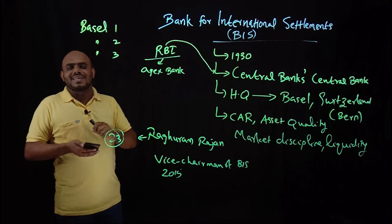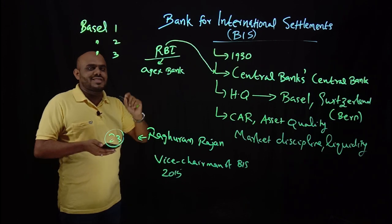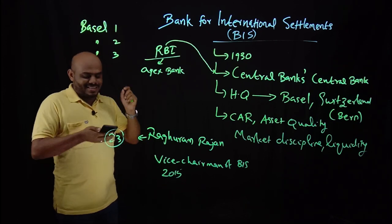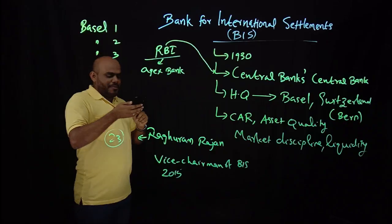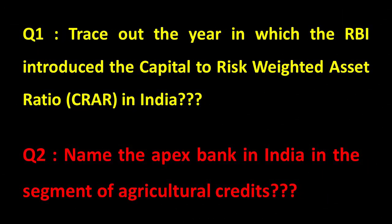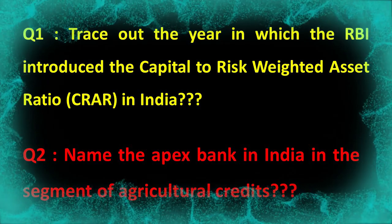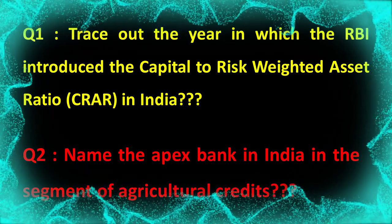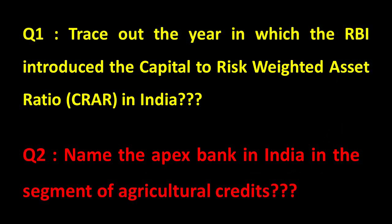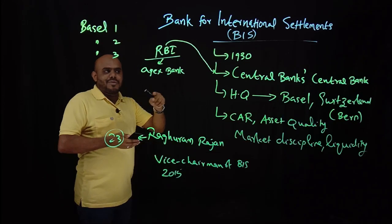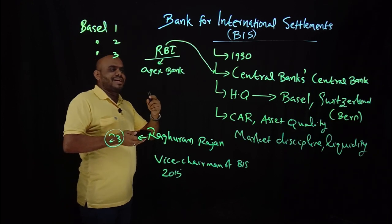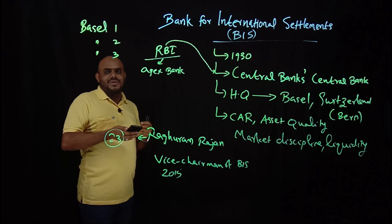Now let's check your knowledge with a question and answer session. First question: trace out the year in which RBI introduced the Capital to Risk-Weighted Asset Ratio. Second question: name the apex bank in India in the segment of agricultural credit. Think about the questions, find the answers, and add them in the comment section.